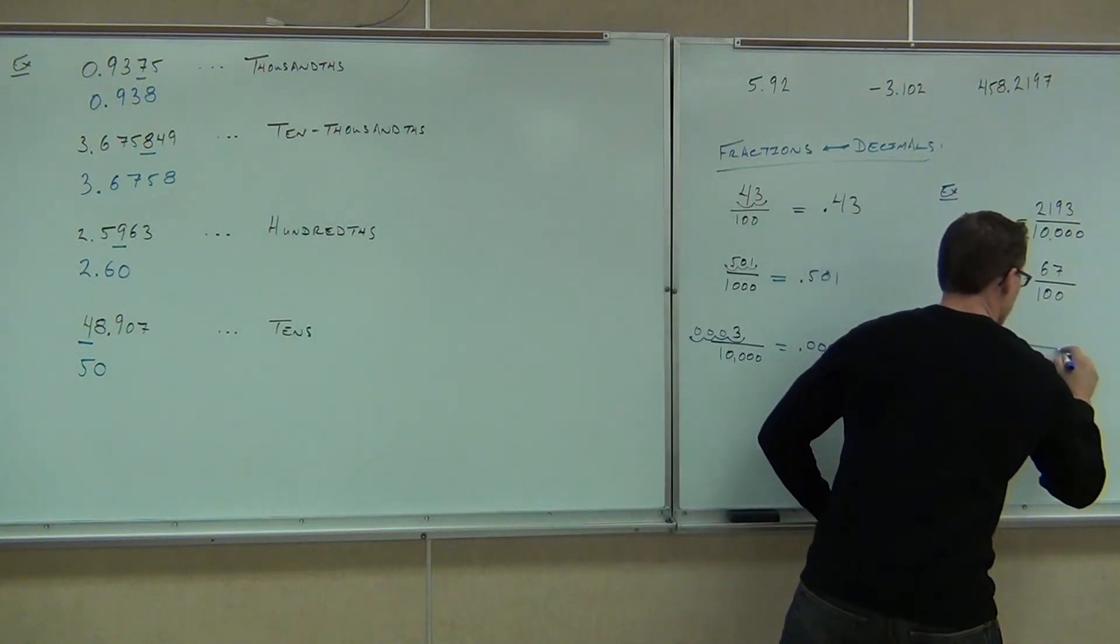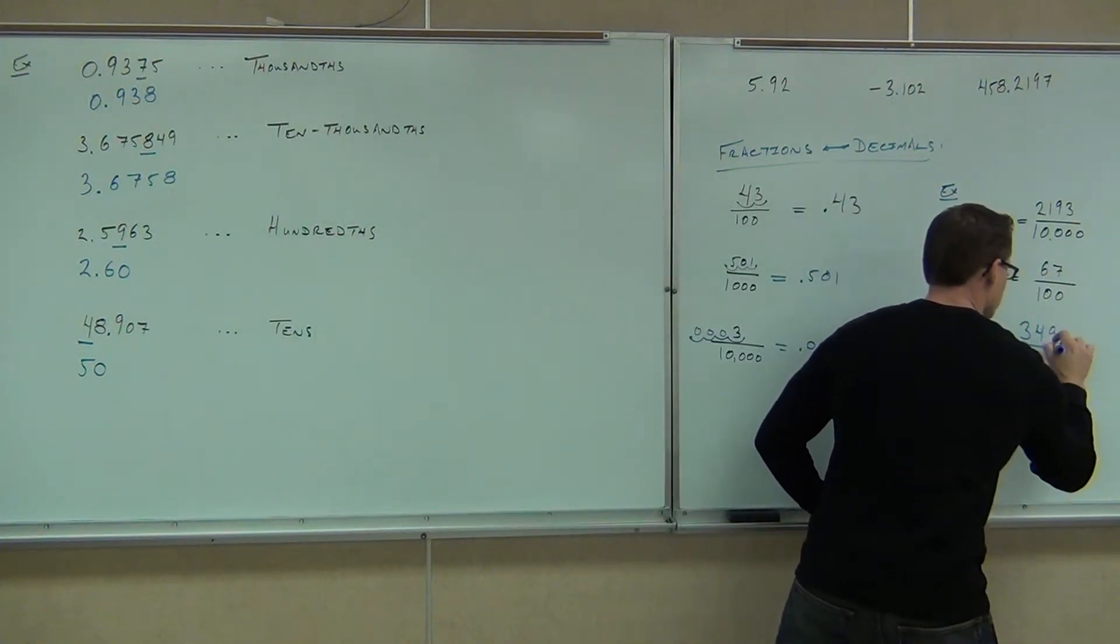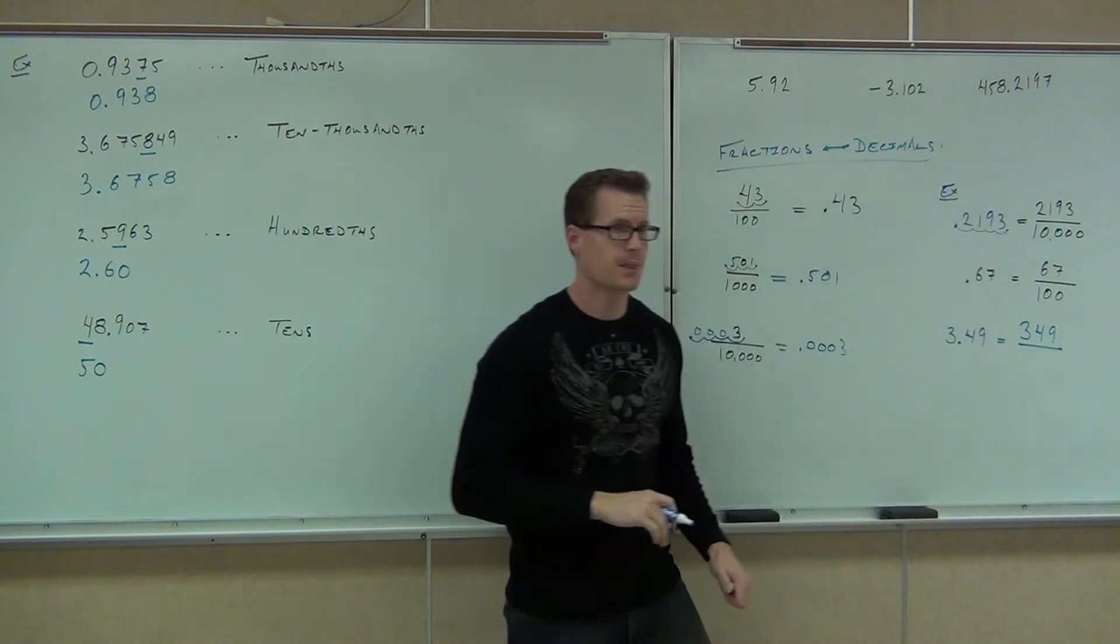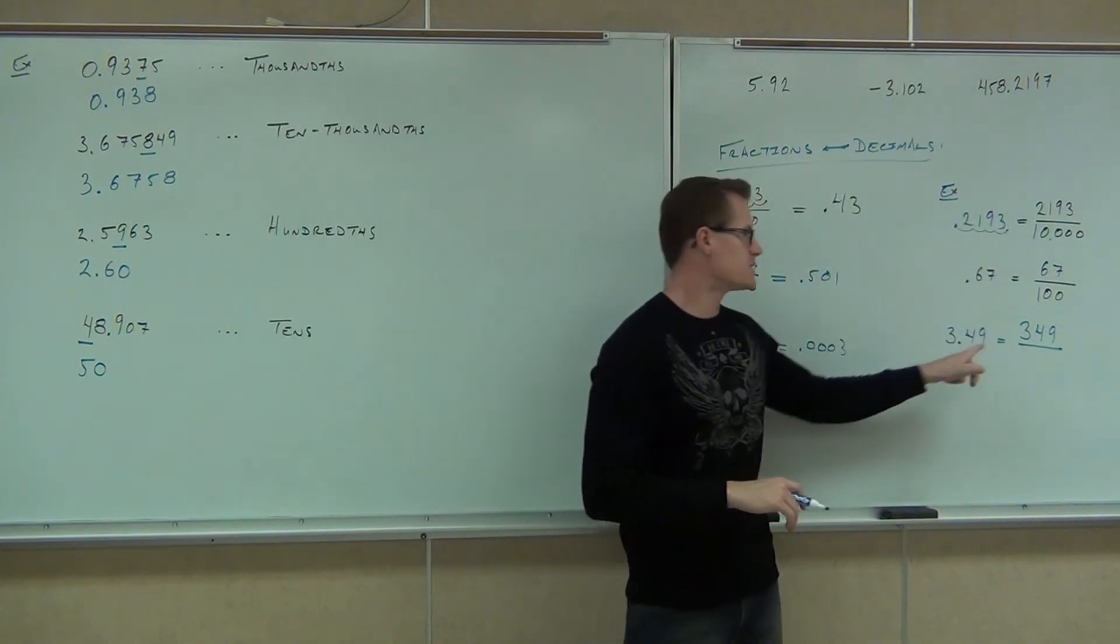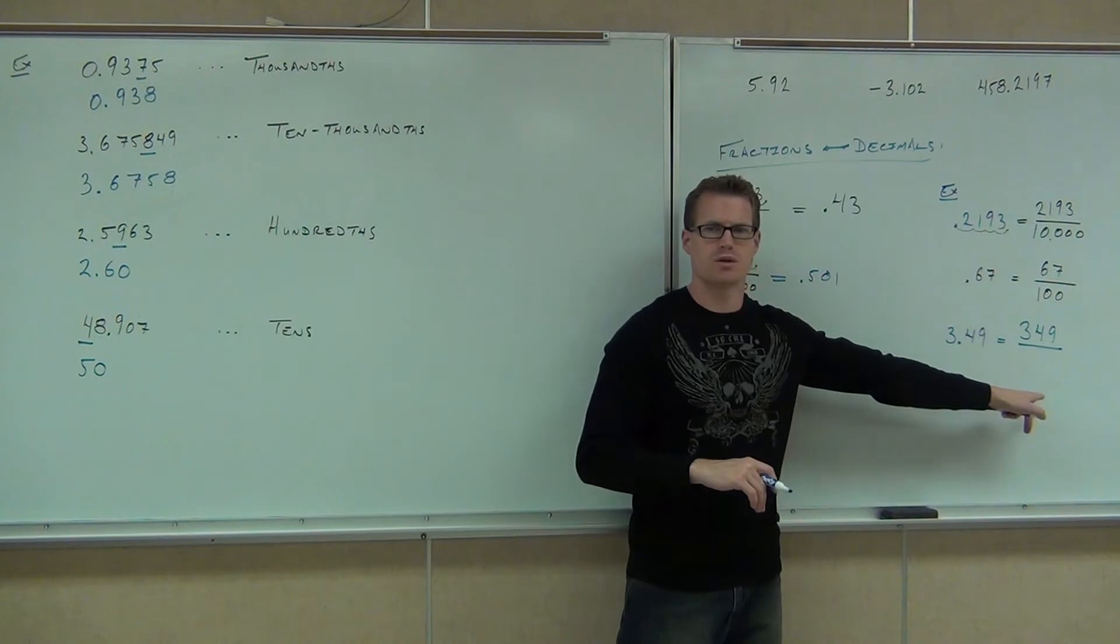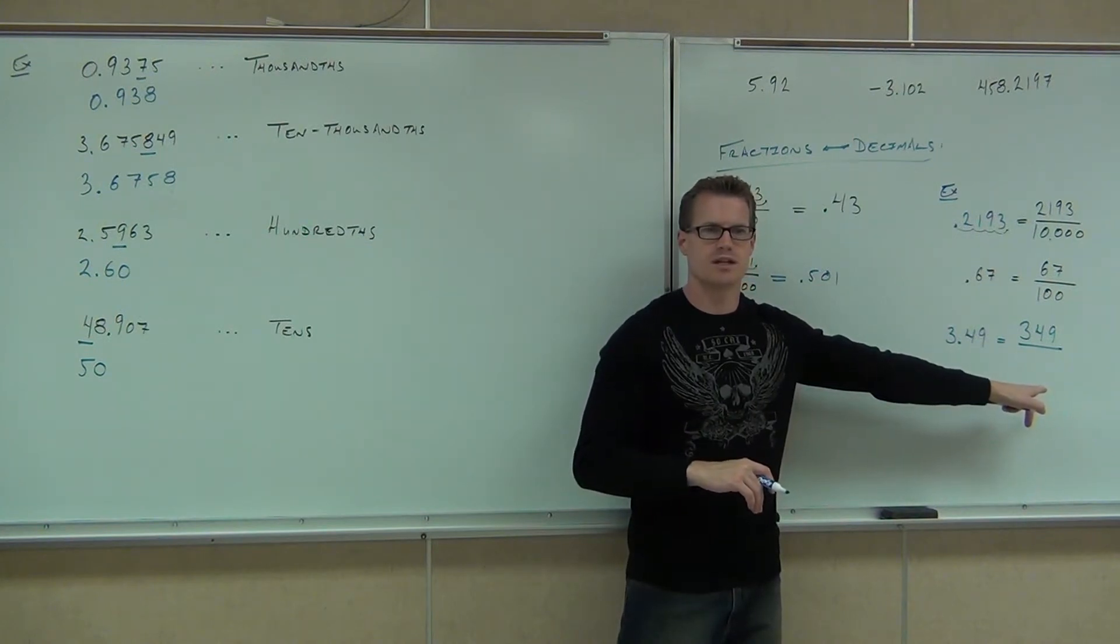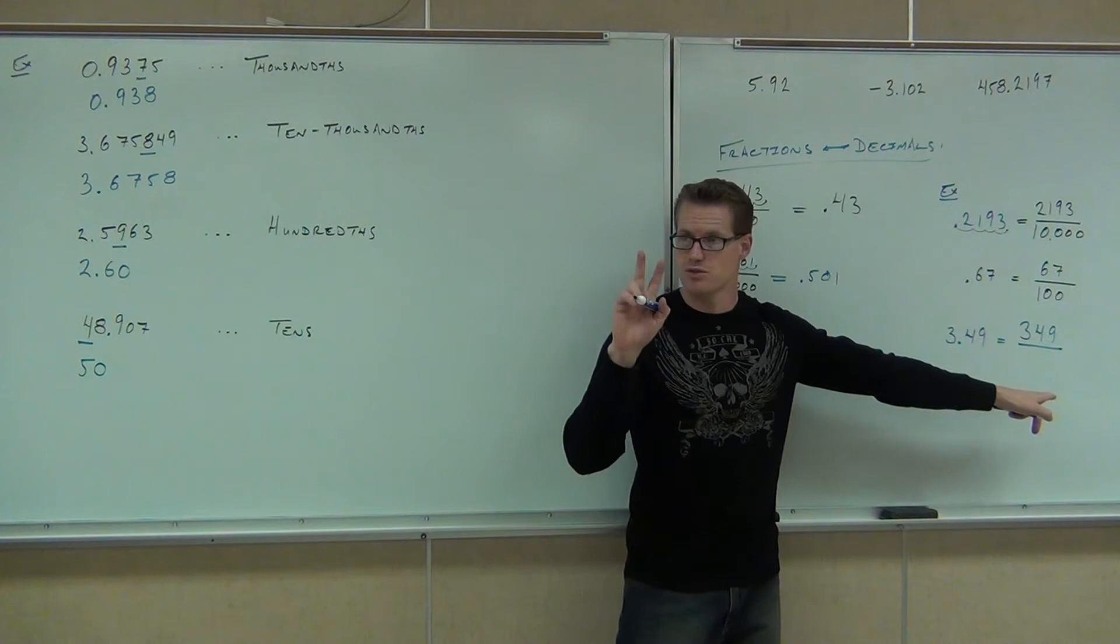Well, I know that the numerator is supposed to be 349 because I can't have a decimal on that fraction. It's going to be 349. But what's my denominator going to be? 100 or 1,000? What do you think? How many spots are you moving in a decimal? Two. Two spots.